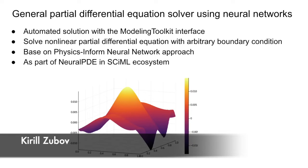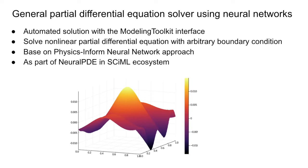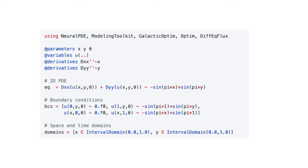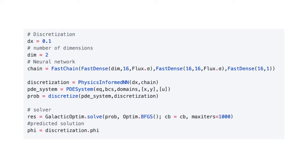Hi, I am Kirill Zubov. I contributed to the project of a general partial differential equation solver using neural networks in the Julia language. My project aimed to design a PDE solver using a deep learning approach based on physics-informed neural networks with the ModelingToolkit interface, as part of the NeuralPDE library. Let's see how it works with an example of solving the two-dimensional Poisson equation with some boundary conditions and space domains. We describe our equation by its Julia code in the forms shown on the slide. The key part was implementing a symbolic description of the PDE so the system can discretize and solve it automatically, yielding a neural network solution after training.